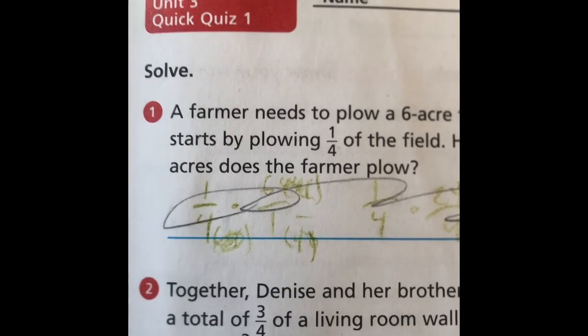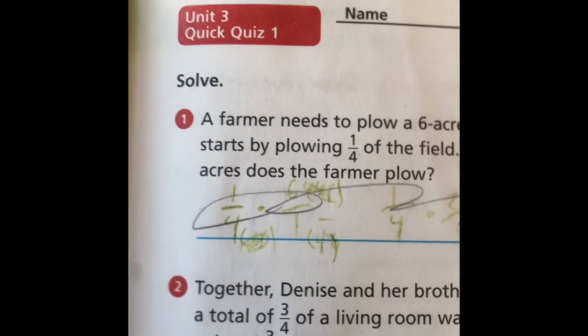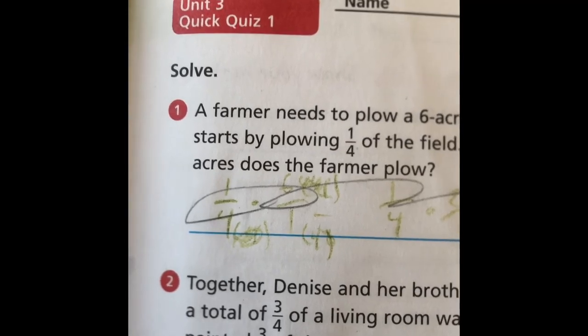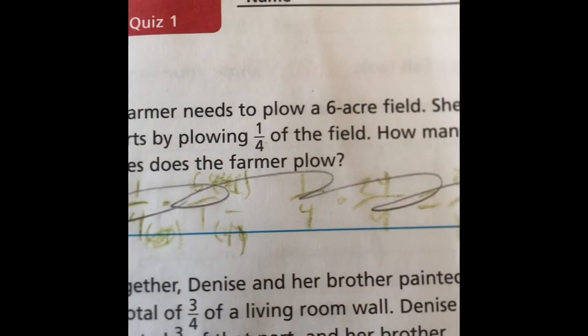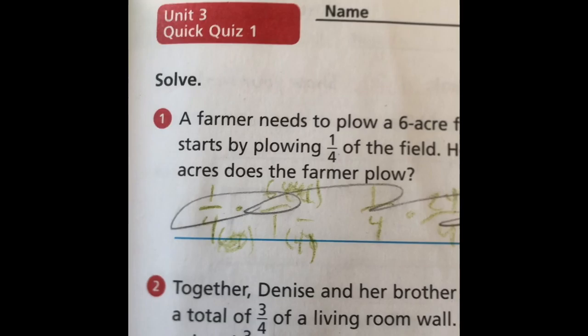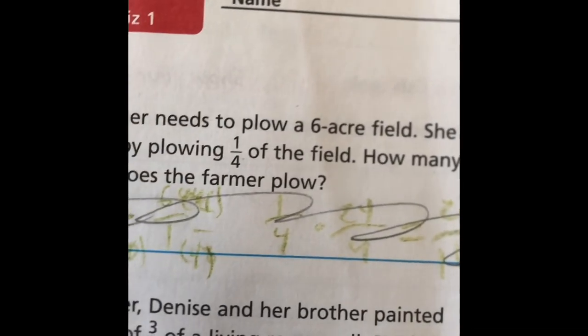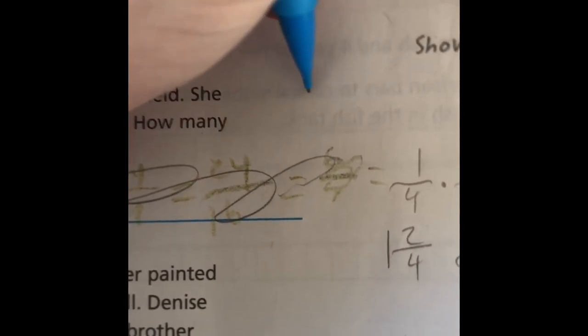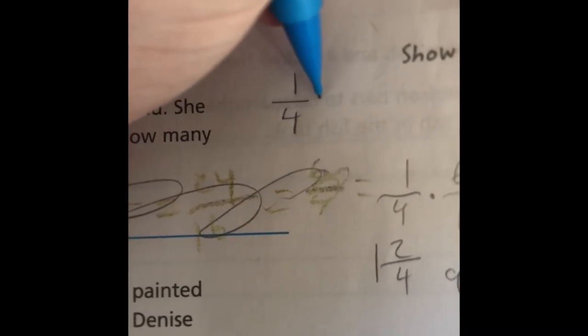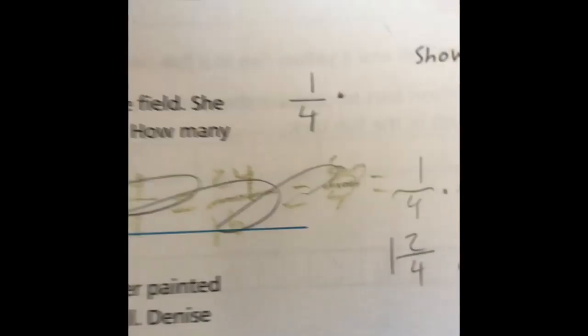Now that we're in our breakout rooms together, I wanted us to look at number one on the quick quiz together. A farmer needs to plow a six-acre field. She starts by plowing one-fourth of the field. How many acres does the farmer plow? What is the first thing we need to do in order to do this problem? Right, we need to set it up. What are our values? What type of problem is it? It is a multiplication, and the first is the fraction: one-fourth times six.